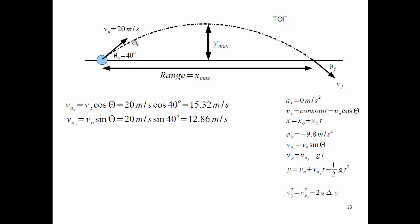The angle is 40 degrees, which tells us the X and Y components will be comparable — they'd be exactly the same magnitude at 45 degrees. The X velocity is 20 meters times cosine of 40, which equals about 15 meters per second. And 20 meters times sine of 40 is almost 13 meters per second.